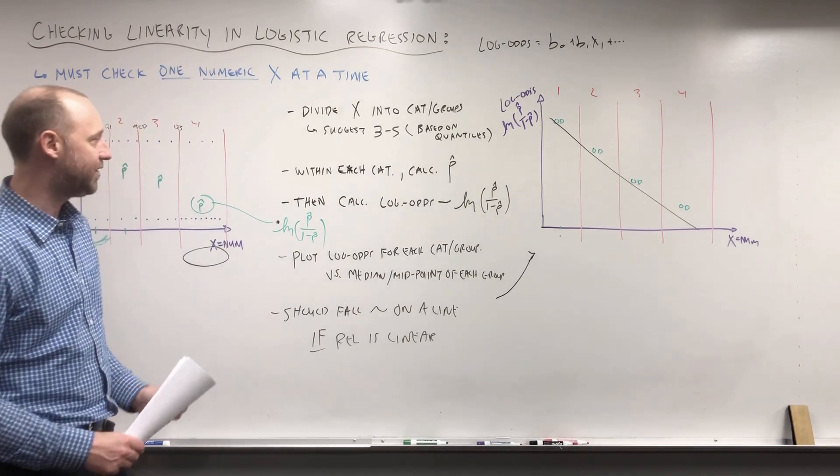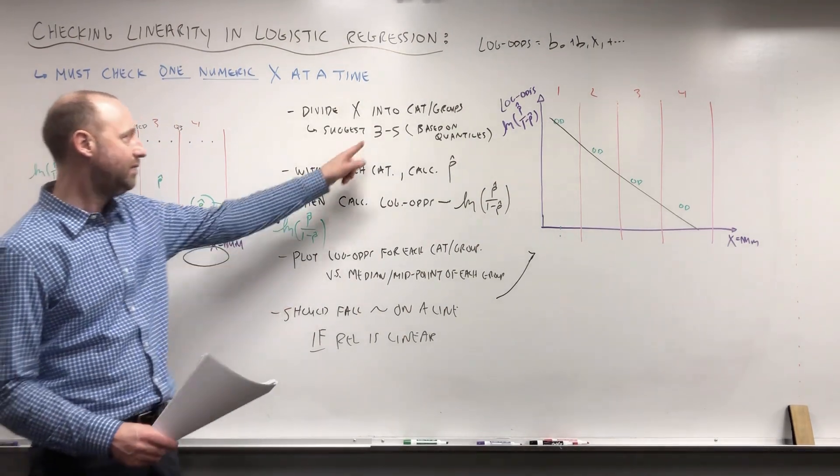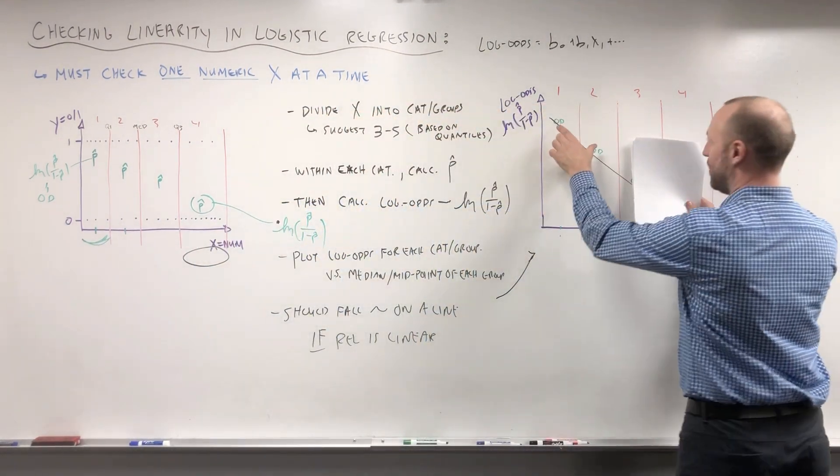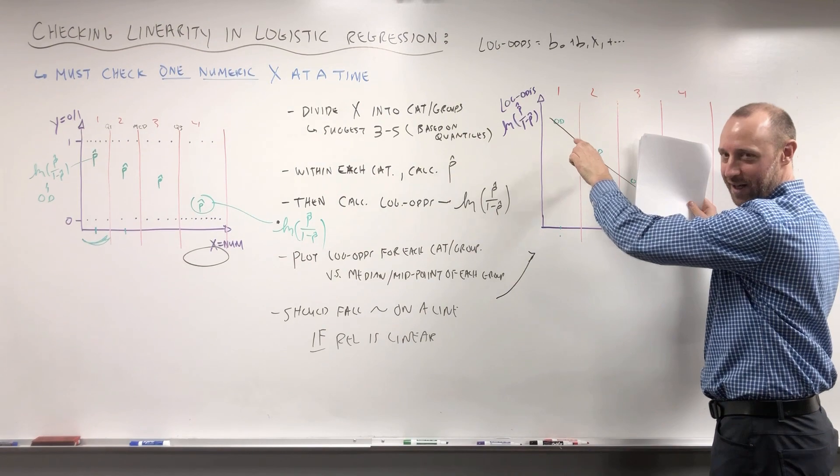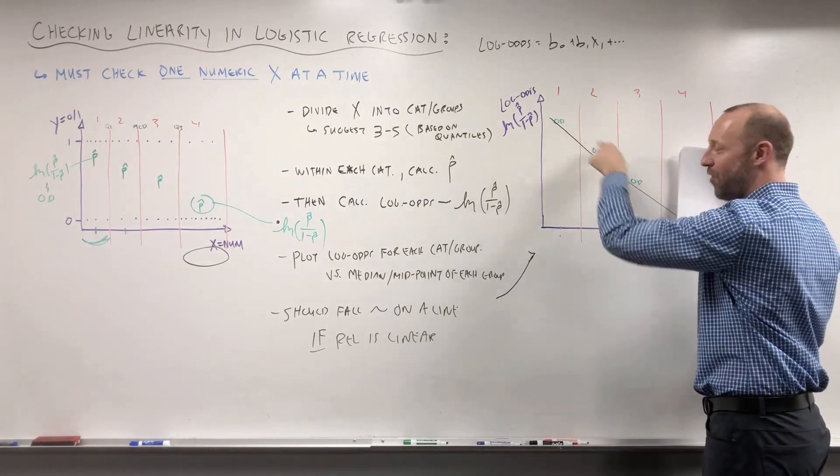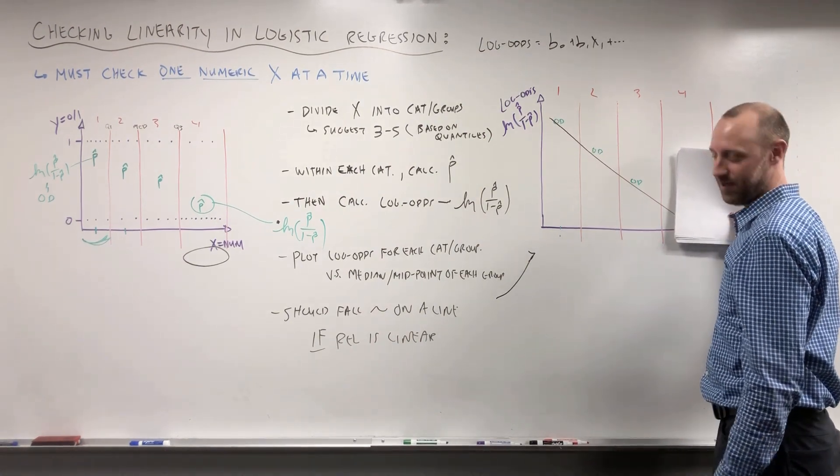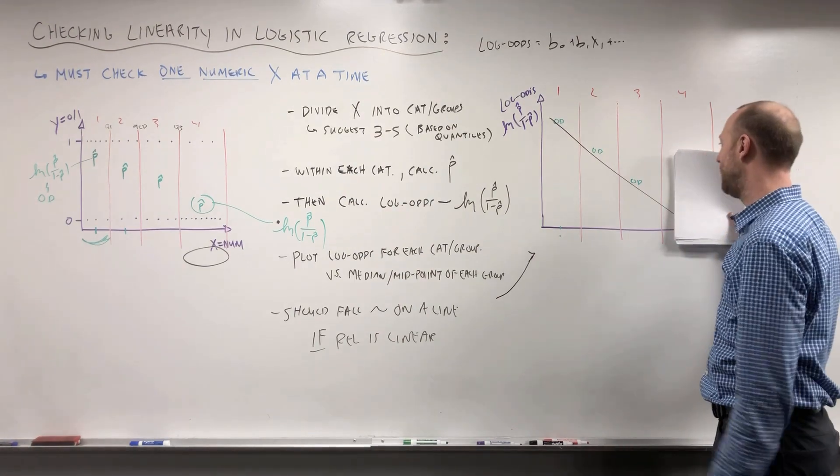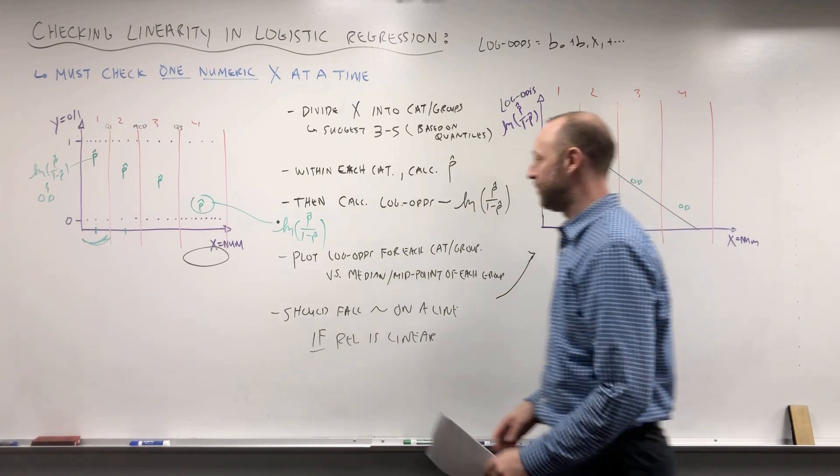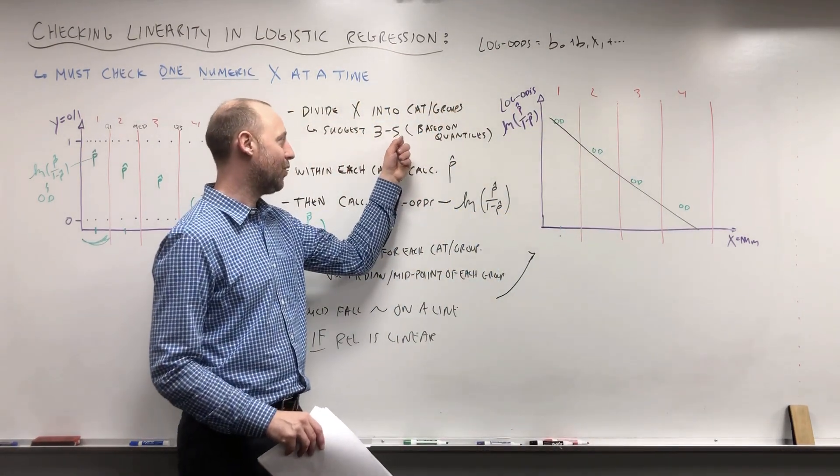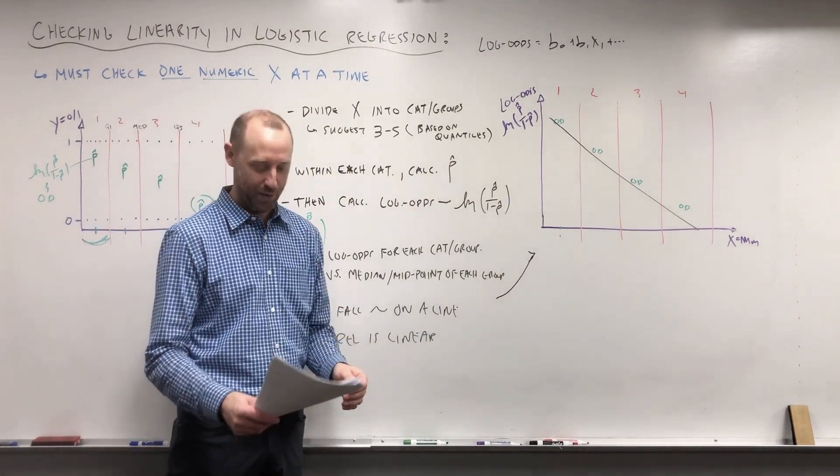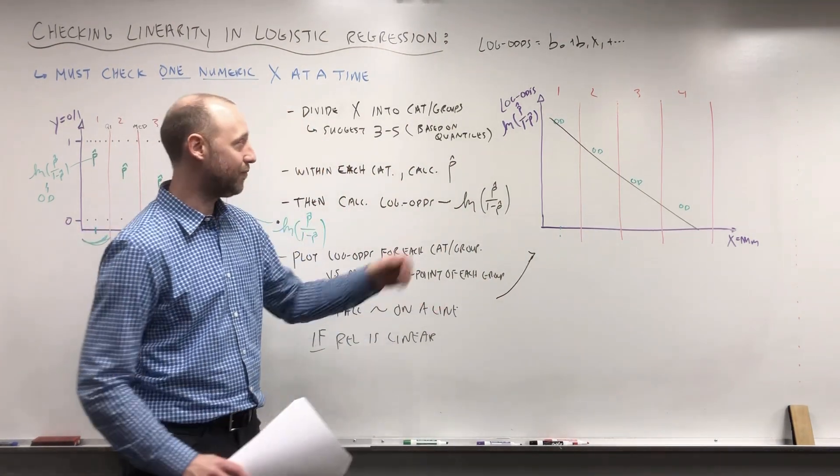Now the reason why I said we need to choose a minimum of three groups is if you choose just two groups, two points always fall on any line, right? If you have three points, the chance of them falling on a line randomly is much lower. Obviously two points will always fall on a line. The chance of having four points fall on a line randomly is going to be quite low. And I said I think you can go as high as five based breaking the data into quintiles, but you probably don't want to go beyond having more than five groups.